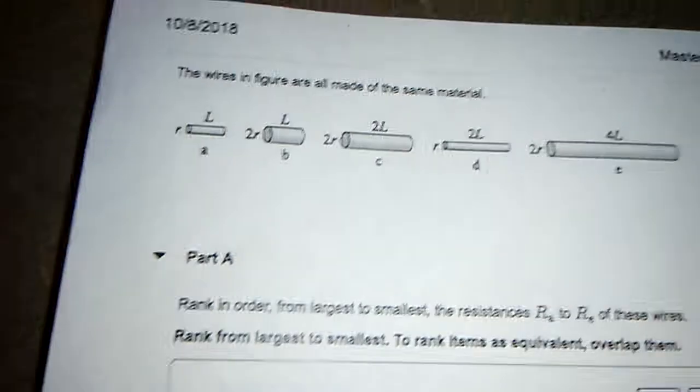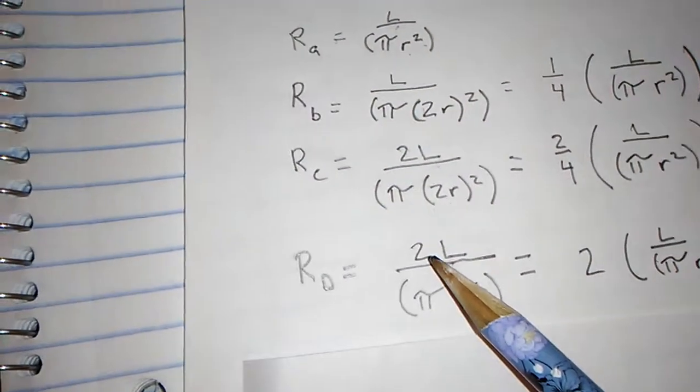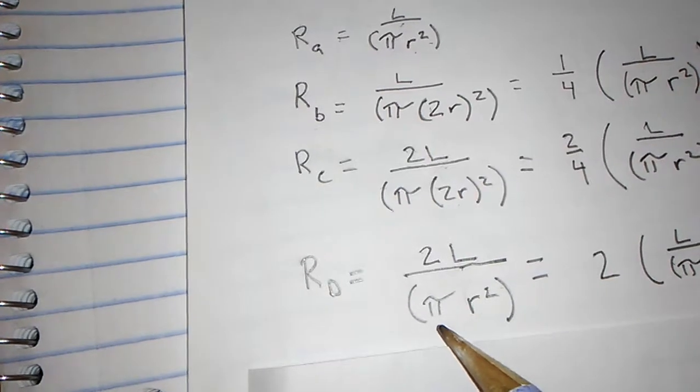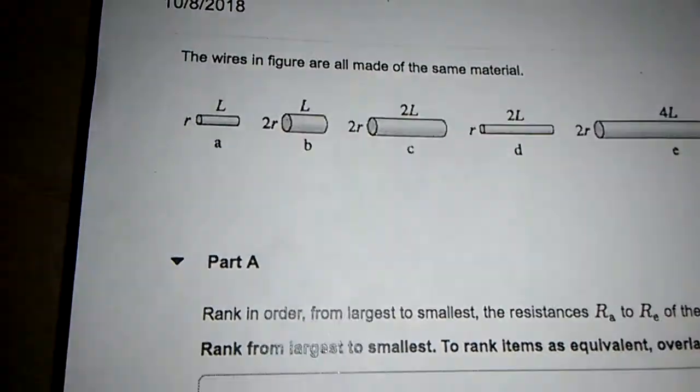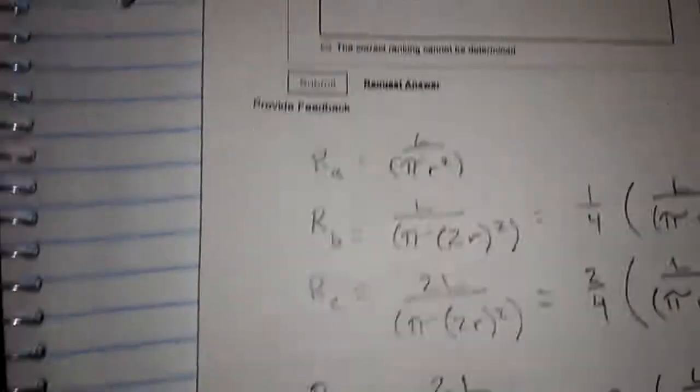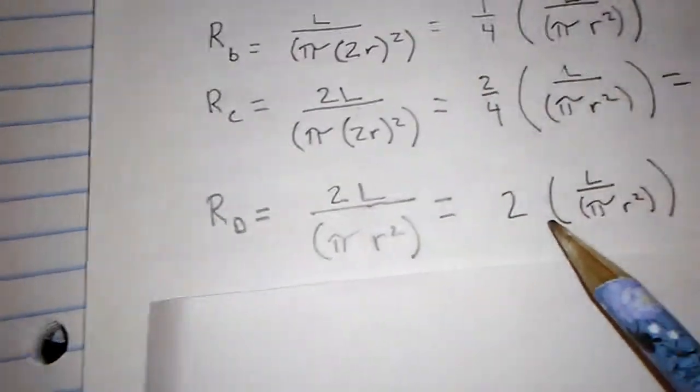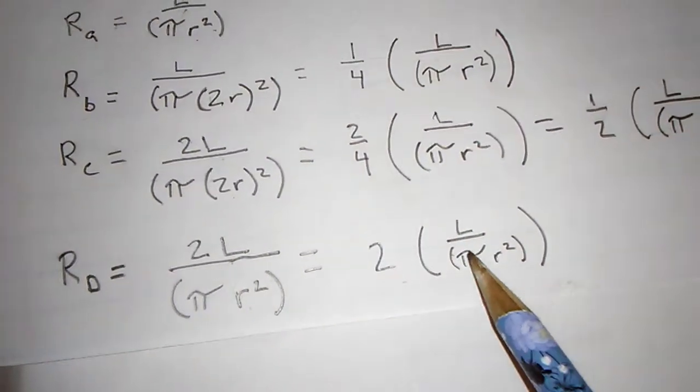Now to calculate D, we do the same thing. That one has a length of two, same on the bottom, same radius as the first one. So we'll just move the two out, and we have two times there.